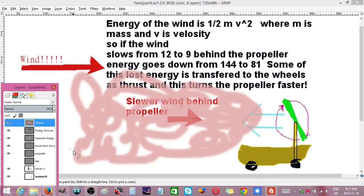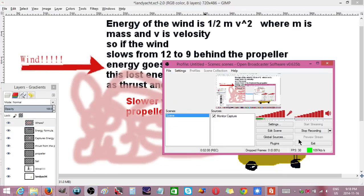This big area back here where the wind has been slowed down is what's providing the energy for this land yacht to go faster than the following wind. Hope that explains it, and thank you, bye bye.